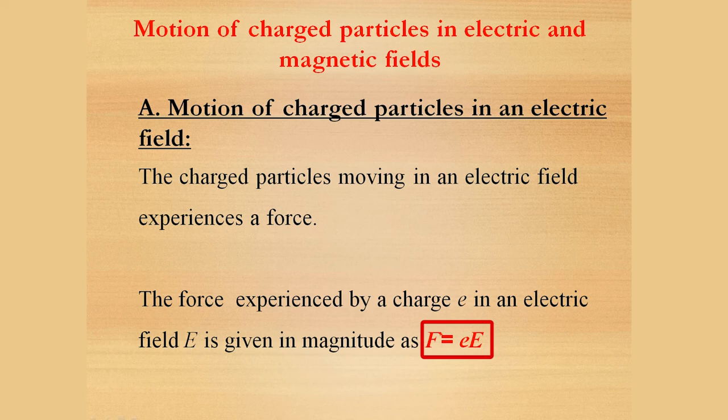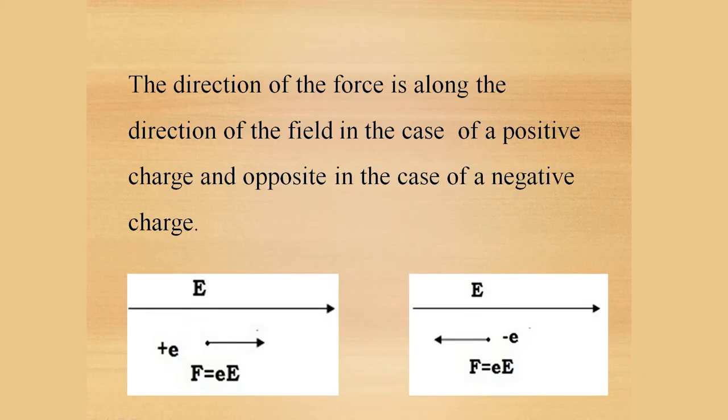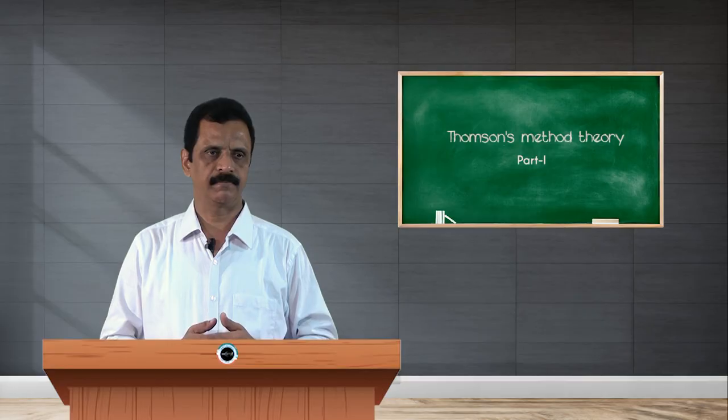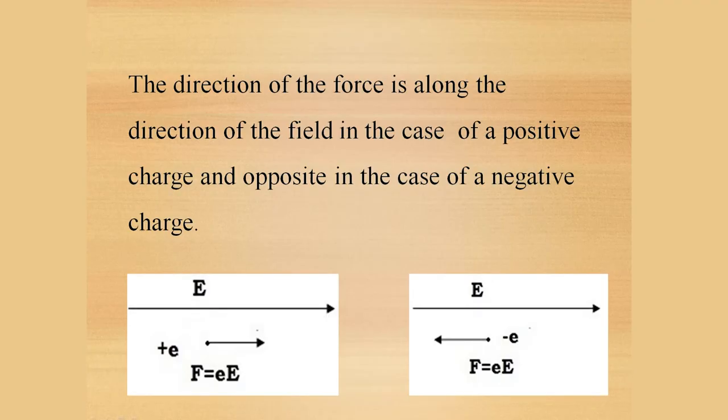And about the direction, the direction of the force is along the direction of the field in the case of a positive charge. And the direction of the force is opposite to the direction of the field in the case of a negative charge. So, in the case of an electron, the force is in a direction opposite to the direction of the motion of the electron. In the case of a proton or a positron, the direction of the force is same as the direction of motion of the positron or proton.